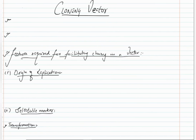Any medium which is used to carry recombinant DNA is termed as a vector. Vector in literal terms means vehicle. Mostly plasmids and bacteriophages act as vectors because they have the ability to replicate within bacterial cells independent of the control of chromosomal DNA.